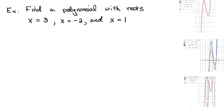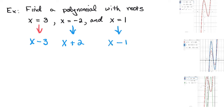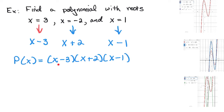Here's a problem applying the Factor Theorem. Given three solutions, find the polynomial. If x equals 3 is a solution, then x minus 3 is a factor. If negative 2 is a solution, then x minus negative 2, which is x plus 2, is a factor. If 1 is a solution, then x minus 1 is a factor. The polynomial is those three factors multiplied together.